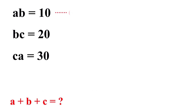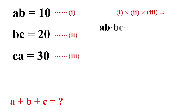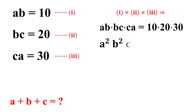Let's call this equation 1, this one equation 2, and this one equation 3. Now, by multiplying equations 1, 2, and 3, we get AB times BC times CA equals 10 times 20 times 30. Simplifying this, we get A squared times B squared times C squared equals 6,000.